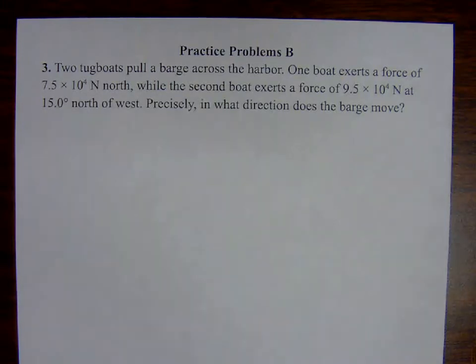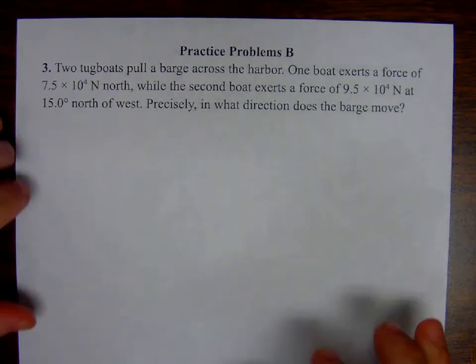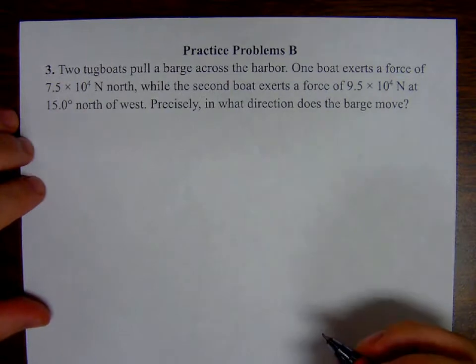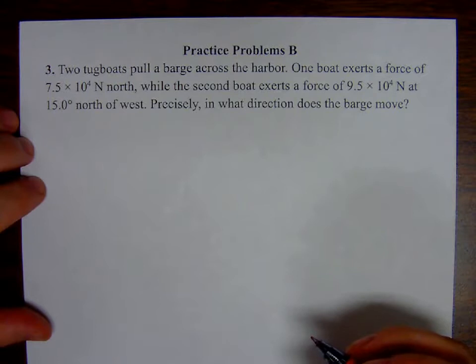Okay, let's take a look at practice problem number three, associated with sample problem B here in chapter four. Number three: two tugboats pull a barge across the harbor. One boat exerts a force of 7.5 times 10 to the fourth Newtons north, while the second boat exerts a force of 9.5 times 10 to the fourth Newtons at 15 degrees north of west. Precisely, in what direction does the barge move?